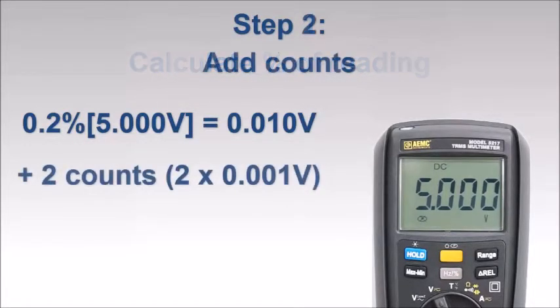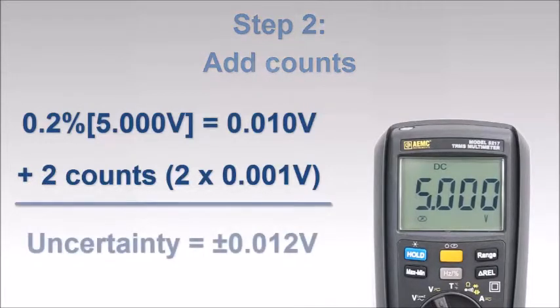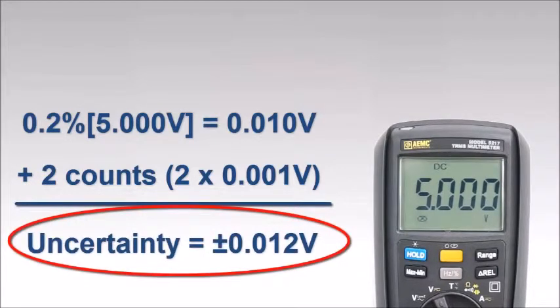We then add two counts. Taking the least significant digit of our reading, we define each count as one thousandth of a volt. Thus, the sum of the two counts equals 0.002 volts. Adding the percentage and counts together, we calculate an uncertainty of plus or minus 0.012 volts, or 12 thousandths of a volt.